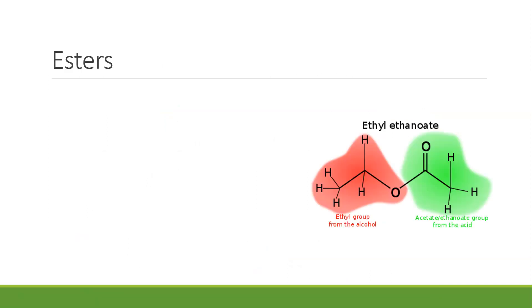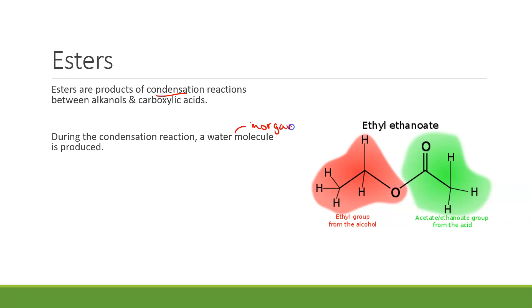The other reaction that alcohols can undergo is, of course, esterification. Esters are products of the condensation reaction. The previous reactions were redox reactions. When we're talking condensation reaction, we are condensing two molecules into one larger molecule with the production of water. So we're going to produce a water molecule. Our inorganic byproduct in this case is water, and then we will form an organic ester, larger molecule, along with this.